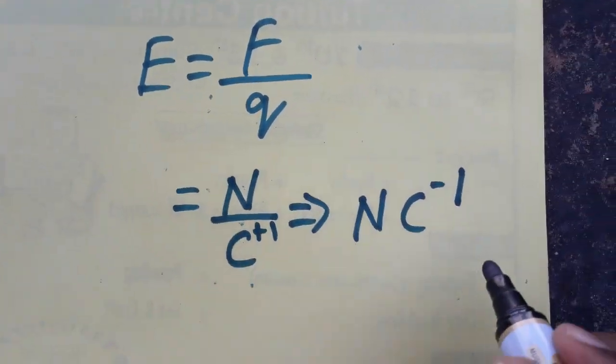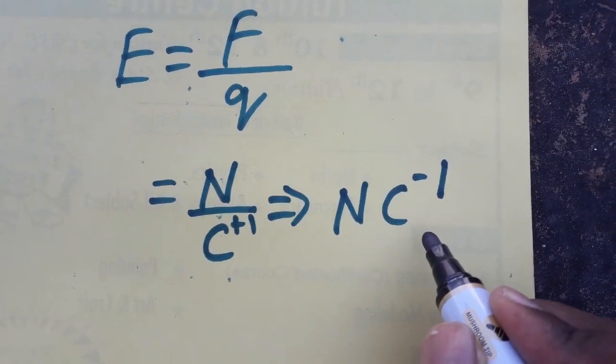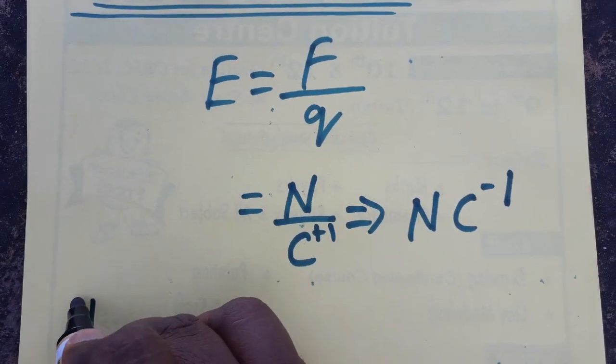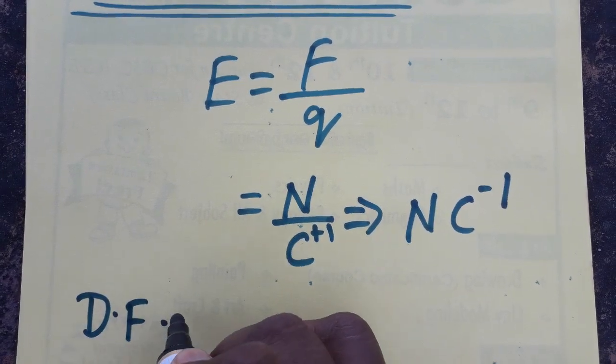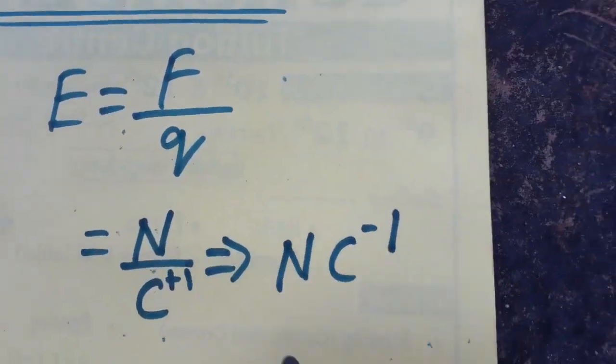So SI unit of electric field will be newton coulomb inverse. In dimensional formula, how we can find the dimensional formula? First we should solve the unit.